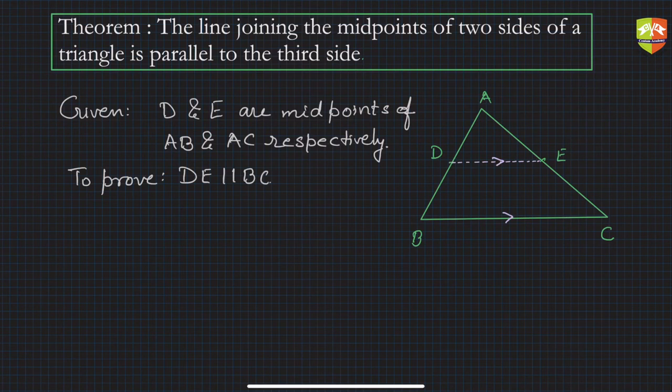So how to go about it? In this theorem there is something which is to be proved as parallel to the other side, so basic proportionality theorem can be useful.